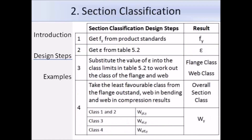Let me run through the steps for cross-section classification. Step 1 is to obtain the value of F_Y; the UK National Annex recommends getting that from the product standards, and the value of F_Y will depend on the steel grade and the thickness. The next step is to get the value of epsilon, which you can work out once you have F_Y — using the equation or simply getting the value of epsilon from the bottom of Table 5.2 in the Eurocode, just like in BS 5950. Step 3 is to substitute epsilon into the limits given in Table 5.2 to determine the classes of the individual elements that make up the section.